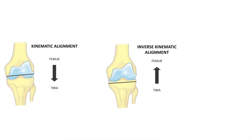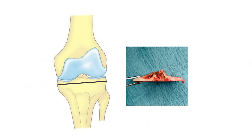By starting with the tibia and performing an anatomical cut, the tibial joint line is restored to its native obliquity. This anatomical cut is done for varus knees, neutral knees, and valgus knees. The rest of the operation is the same as a conventional ligament balancing technique, but you start off with the patient-specific tibial cut.